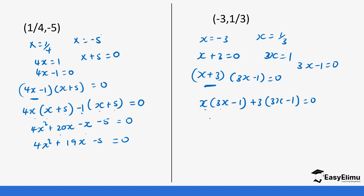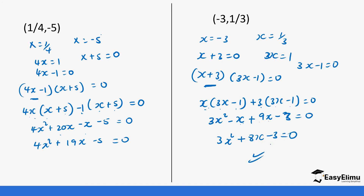So x times 3x gives us 3x squared. Then x times negative one gives us negative x. Plus three times 3x gives us 9x. And three times negative one gives us negative three. So this becomes 3x squared plus 8x minus three equals zero. And you get your value.